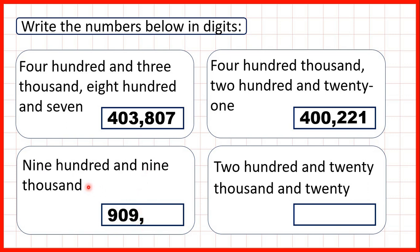But now because we don't have anything written after the word thousand, we need three zeros — zeros in our hundreds, tens, and ones.